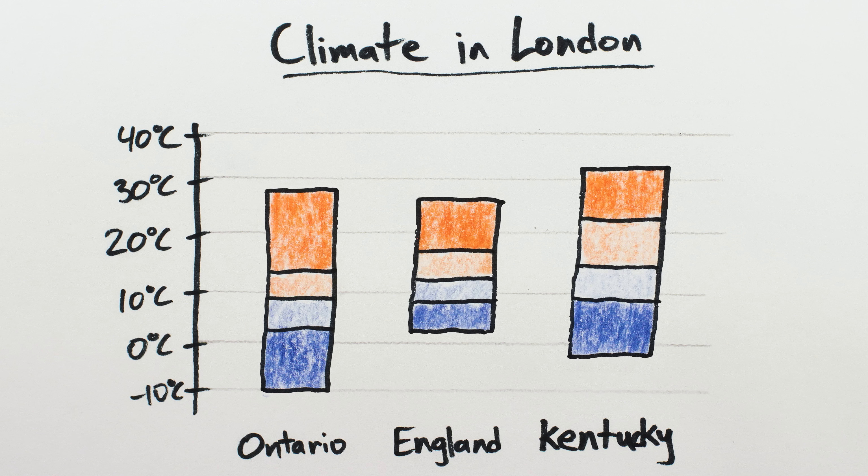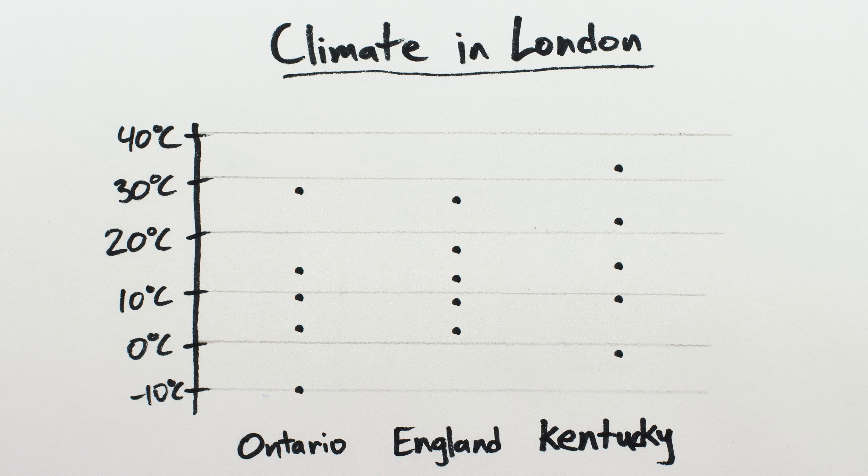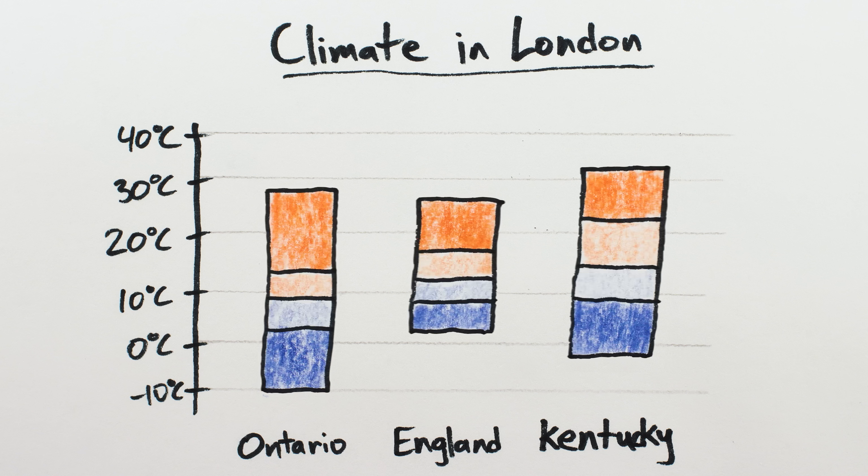A bar chart makes more sense than, say, a point chart, since the temperatures in these Londons can by definition be in between the minimum and maximum ones in our table. The problem is, you can't easily make a chart like this on a computer.